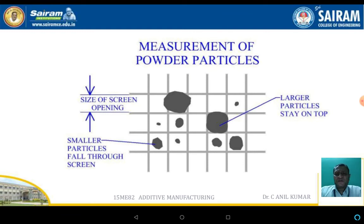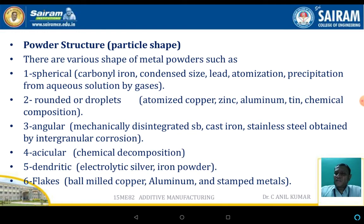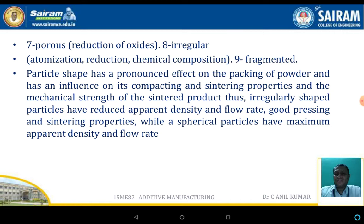If the particle size is very small it will pass through the mesh, and that mesh size number defines the particle size. If the particle stays as a residue and does not pass through, that also depicts the mesh size. There are various shapes of metal powders available: spherical, rounded, angular, acicular, dendritic, flakes, porous, irregular, and fragmented.